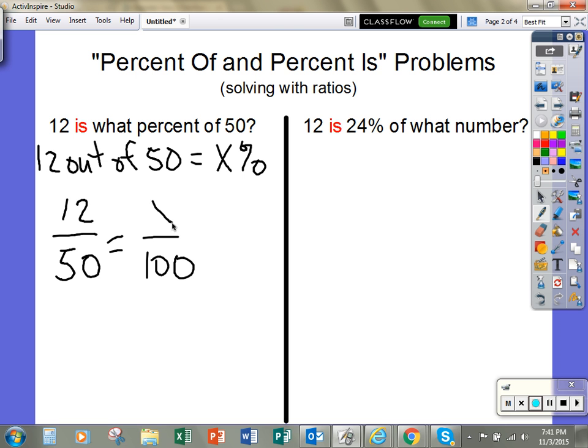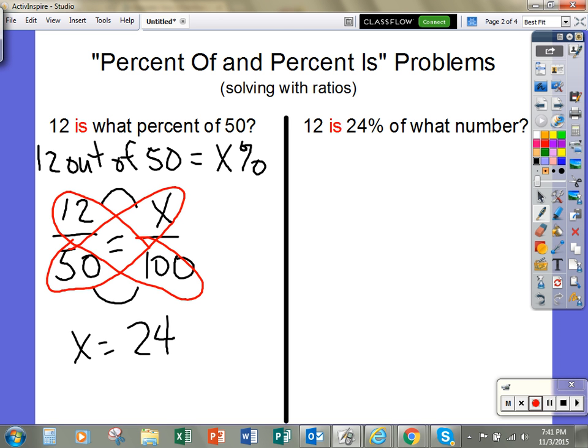Now, I can use the different methods for solving equivalent ratios or proportions that we learned previously in this unit. I can either multiply the top and bottom by the same number or I can butterfly and solve for x. Either way, I'm going to get that x equals 24. And because I know that that's a percent, I would write 24 percent.